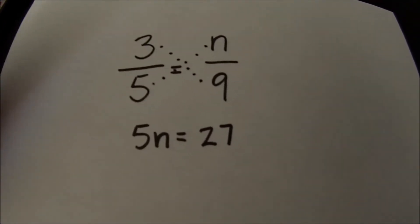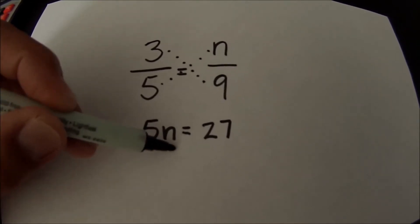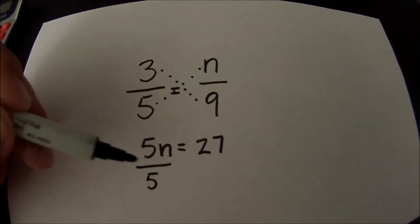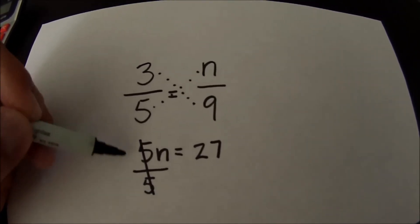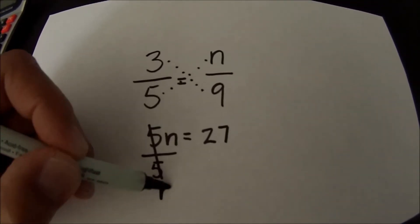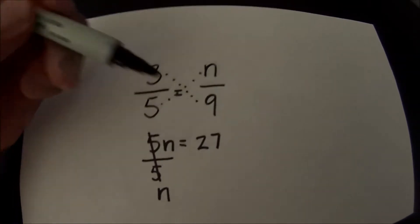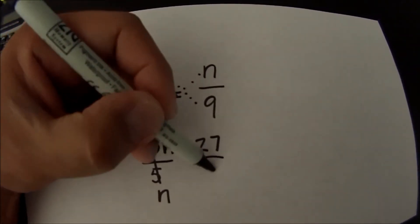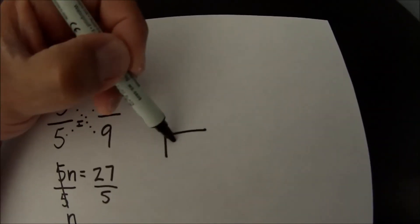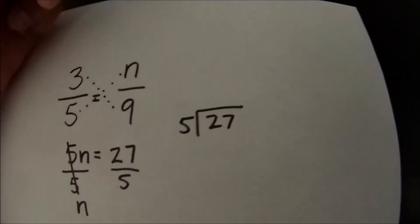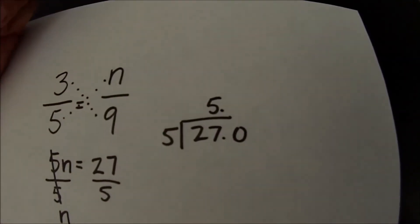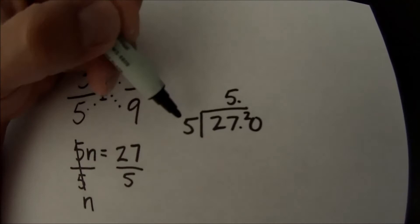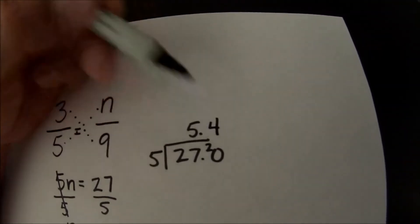So if I'm going to solve this equation I'm going to divide by the number next to the variable which is 5. So I'm going to divide this left side by 5 and 5 into 5 is 1 so that basically cancels out the 5s and I'm left with n. And if I divide 27 by 5, let's come over here and do that. 5 into 27 goes 5 times and there's a remainder of 2 and 5 goes into 20 four times.